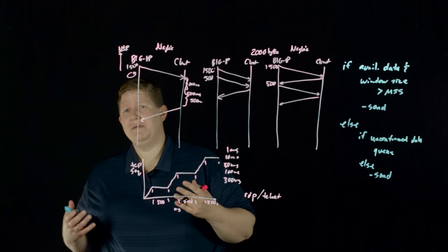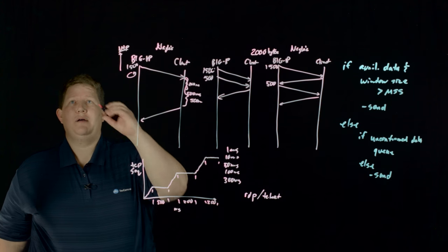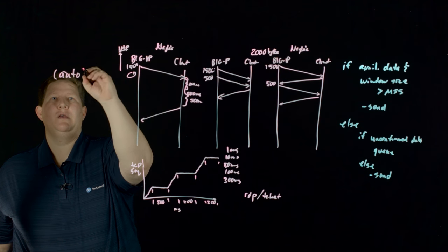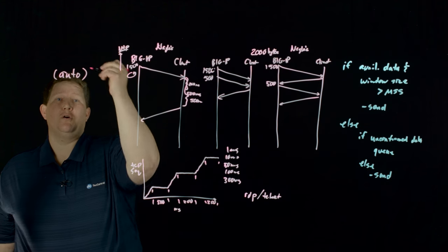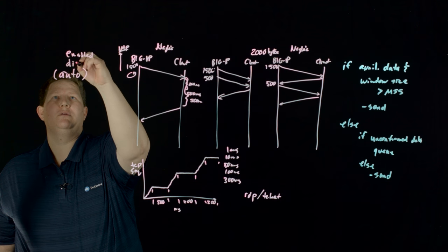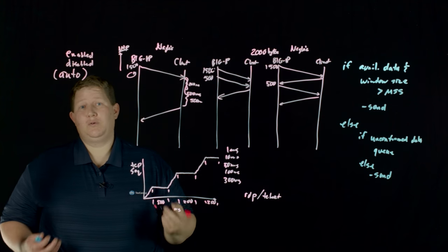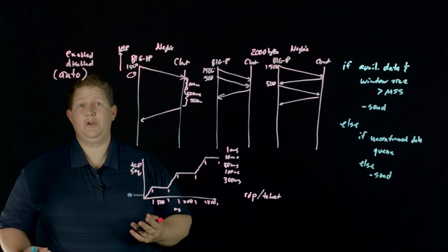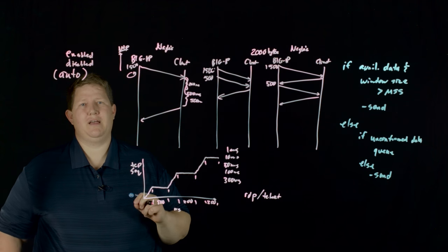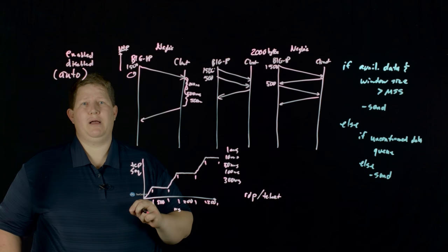Now, so in BigIP 12.0, there's actually some really cool functionality, and that's called auto for Nagle's algorithm. So before 12.0, you had enabled and disabled. Now you have auto. And what 12.0 seeks to do is it looks at heuristics. And so if it determines from the client side that delayed acknowledgements are disabled, then it will go ahead and enable algorithm, or enable Nagle's algorithm.